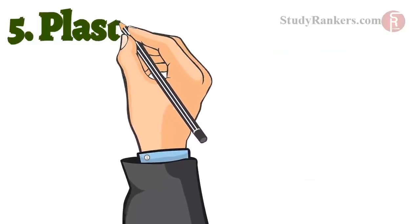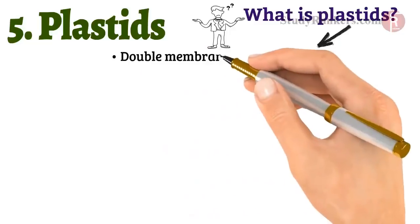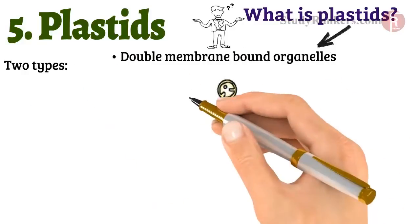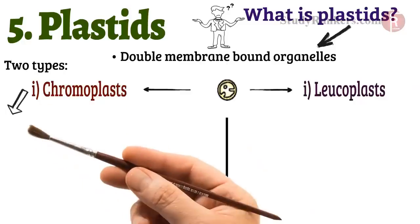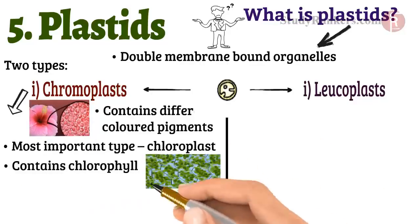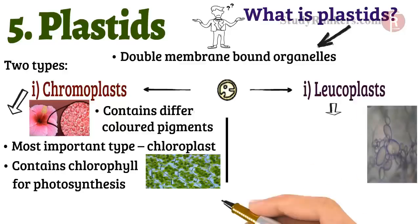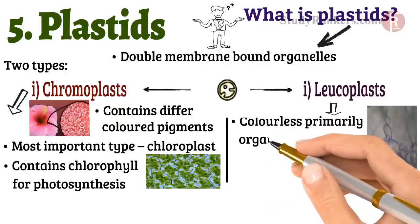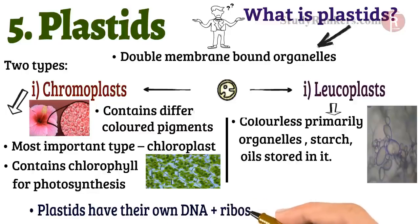Plastids are also an important cell organelle. Plastids are double membrane-bound organelles. There are two types of plastids: chromoplasts and leucoplasts. Chromoplasts contain different colored pigments. The most important type of chromoplast is the chloroplast. Chloroplast contains the green pigment known as chlorophyll, important for photosynthesis in plants. Leucoplasts are colorless organelles in which materials such as starch, oil, and protein granules are stored. Plastids also have their own DNA and ribosomes, similar to mitochondria in structure.